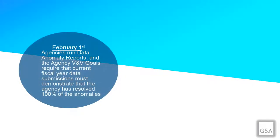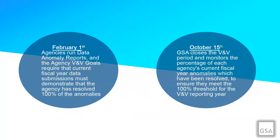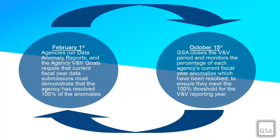Every year on February 1st, each agency will run data anomaly reports to determine the total number of anomalies in its current fiscal year data submissions. The agency VNV goals require that the current fiscal year data submissions must demonstrate that the agency has resolved 100% of its anomalies. On October 15th, GSA will close the VNV period and monitor the percentage of each agency's current fiscal year anomalies which have been resolved, to ensure they meet the 100% threshold. GSA will repeat this process each subsequent year, analyzing agencies' progress towards the resolution target and the total number of anomalies government-wide.